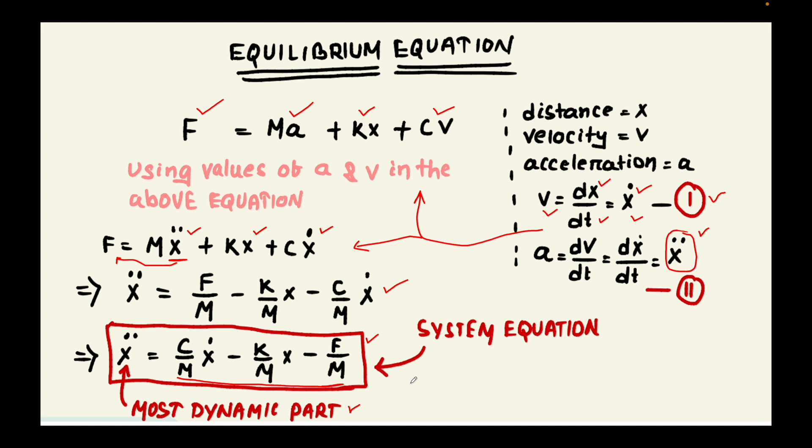Such type of equations are called system equations and this can be used to create a Simulink model. This is for mass damper system but we will do the remaining type of systems into consideration and we will create for that also. For this we will make the plant model for the spring mass damper system in the next tutorial by using this system equation.